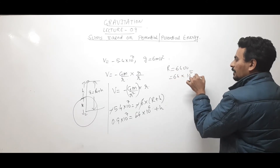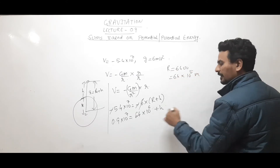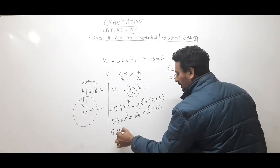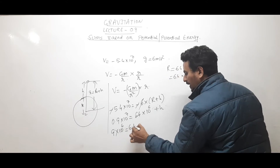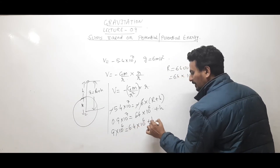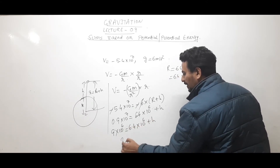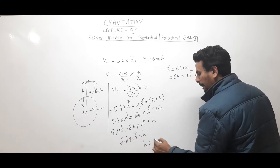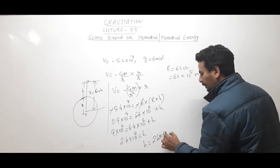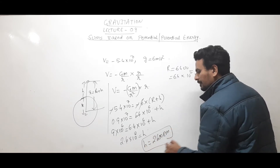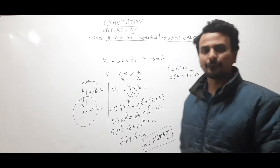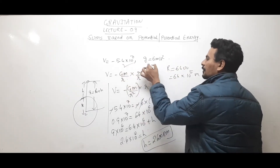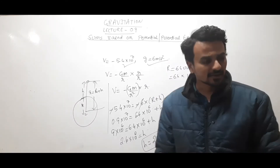So 9×10⁶ equals Re plus h. Re is 6400 km, which is 6.4×10⁶ m. Subtracting: h equals 9×10⁶ minus 6.4×10⁶, which gives h equals 2.6×10⁶ m, or 2600 km. So from the surface of the earth at a height of 2600 km, the gravitational potential and g will take those given values.